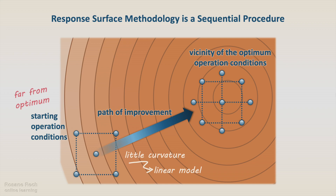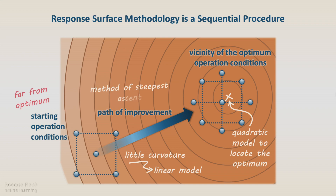In this region, the behavior of the response is not linear anymore, so we must use a quadratic model to describe it and to locate the region of maximum response. The process of following the path of improvement is called the method of the steepest ascent.